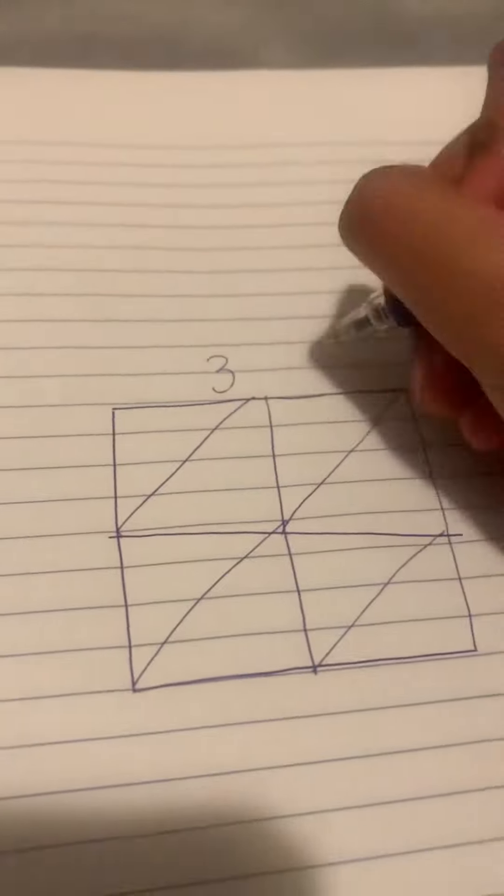Then what you do is put diagonal lines across each line. So let's do 37 times 62. So I'll put the 37 up here and let's put the 62 down here.